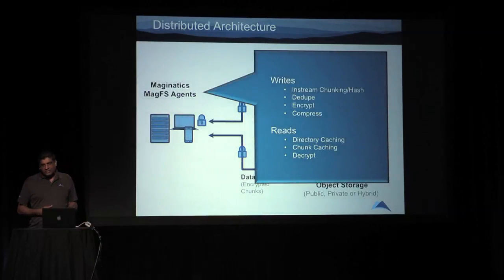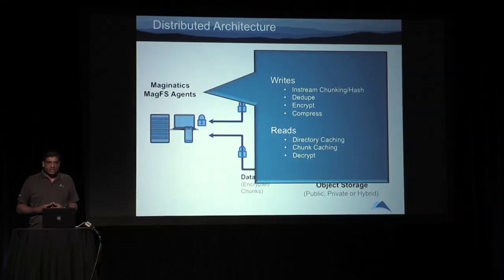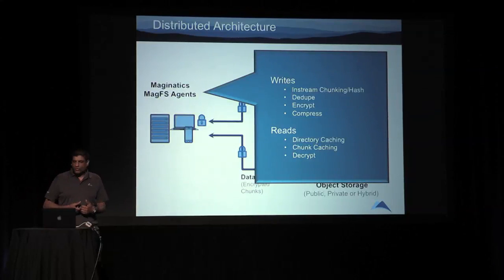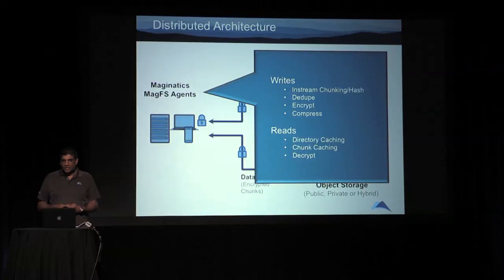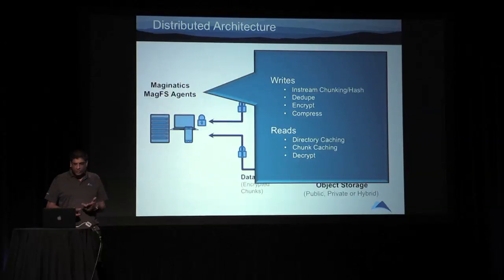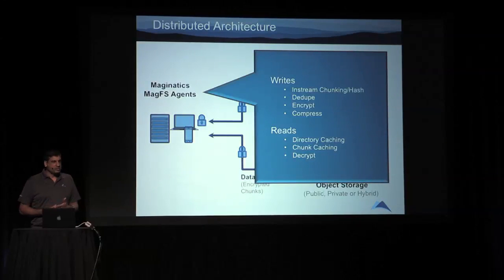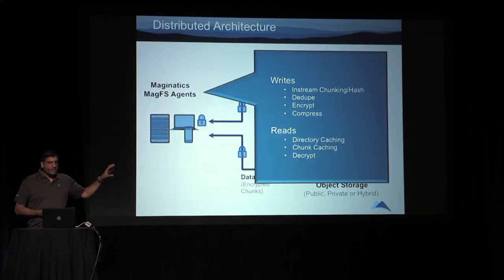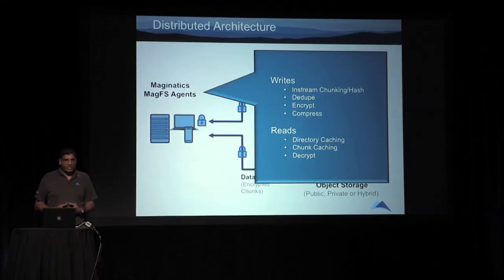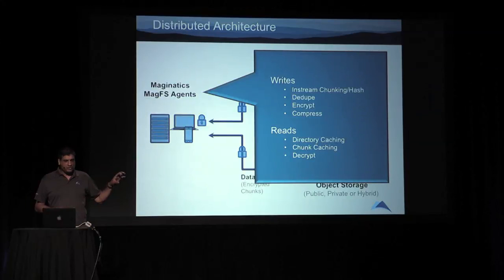The endpoint agent does a lot of the heavy lifting in how we process your data. When you're ingesting data and writing stuff out, we do in-stream chunking and hashing. That hashing is used to deliver functions like deduplication. We also do encryption and compression — all of that is being done at the edge, not at the core. With a monolithic storage solution, you don't have enough horsepower to do that. We want to use all the CPU and memory available at the edge to do all that processing.